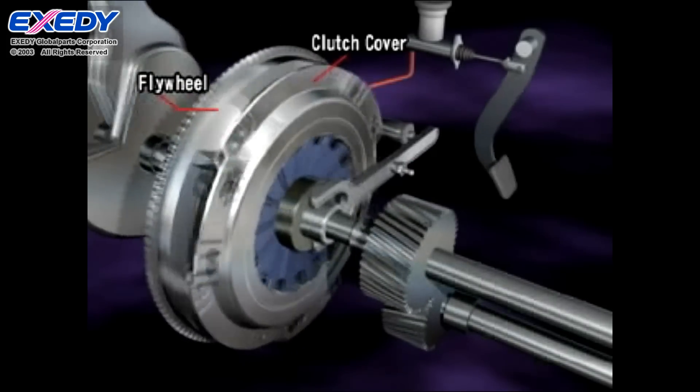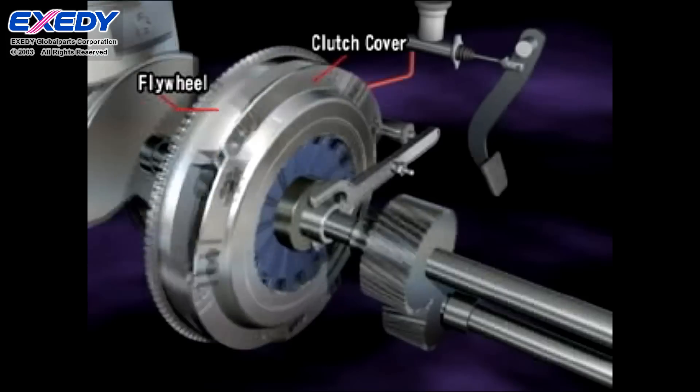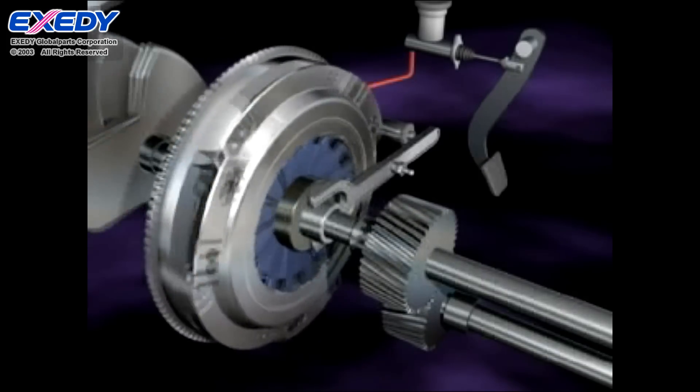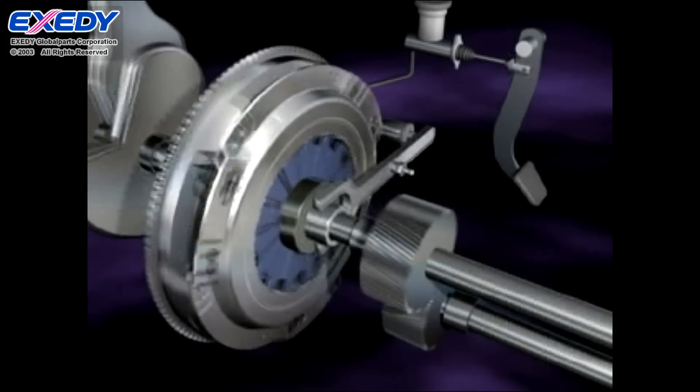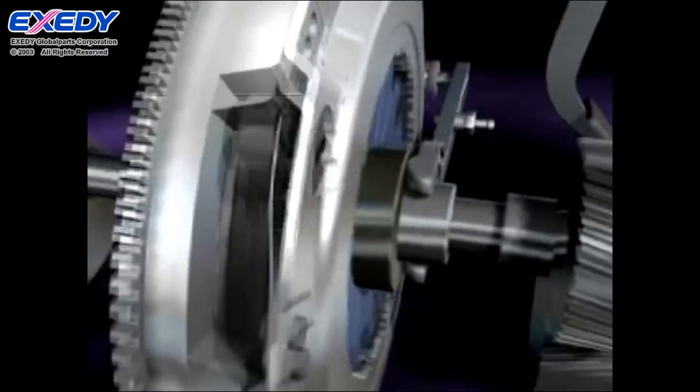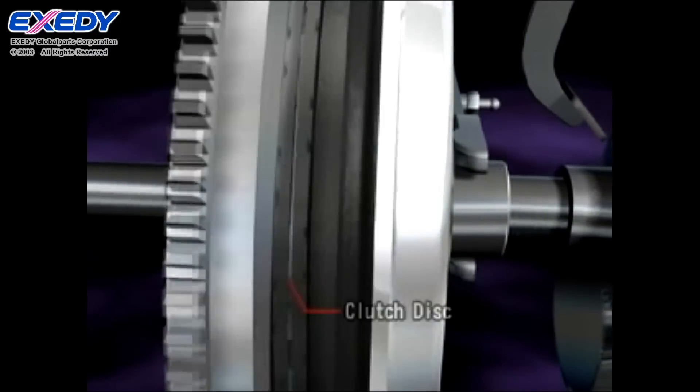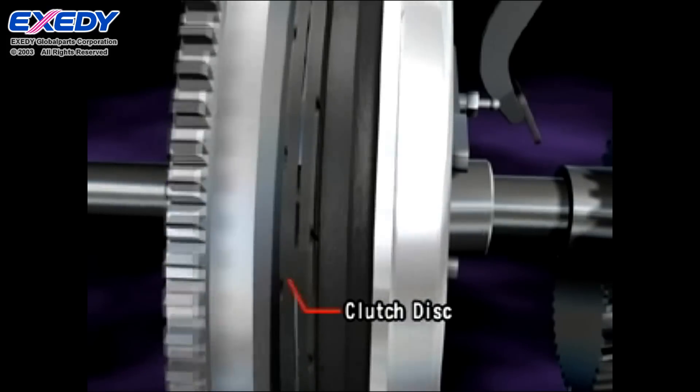The clutch cover and flywheel always revolve together with the engine. When the clutch cover pushes the clutch disc against the flywheel, engine torque is transmitted to the transmission.